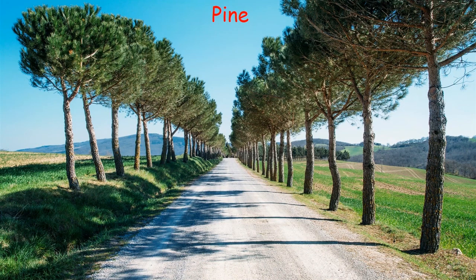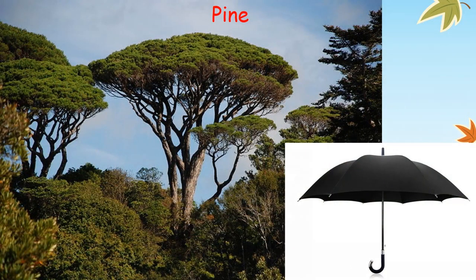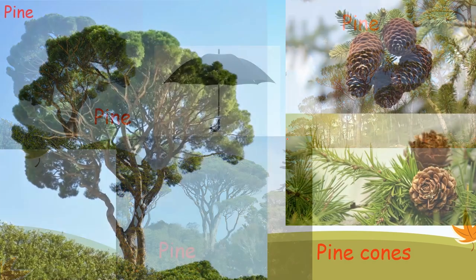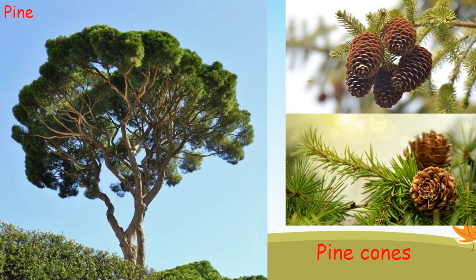This is the pine tree, which we can find around roads and gardens. All pine trees grow like an umbrella — they take the shape of an umbrella. This is the shape of the pine cone; you can see it is different from the cedar cone.